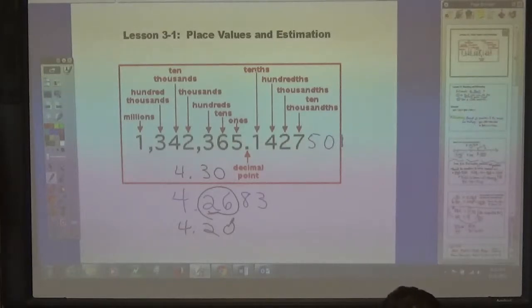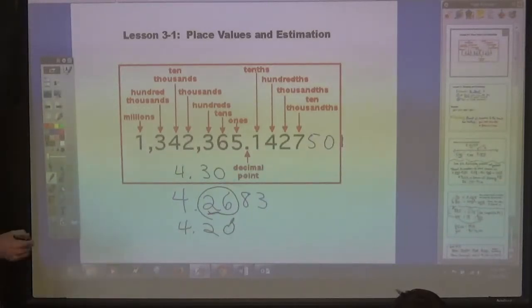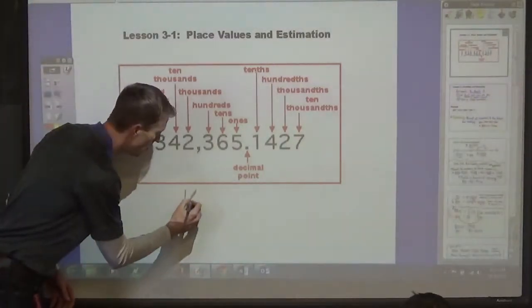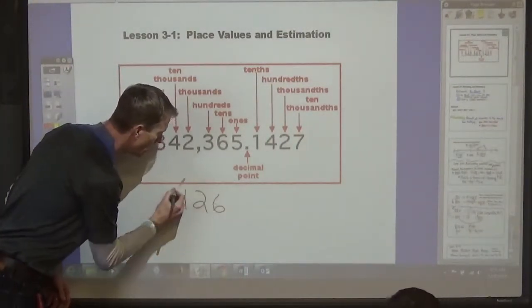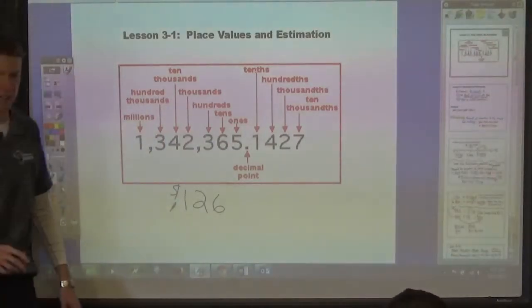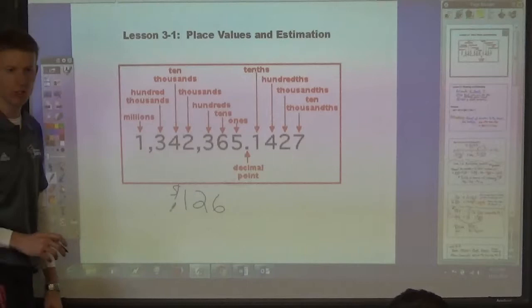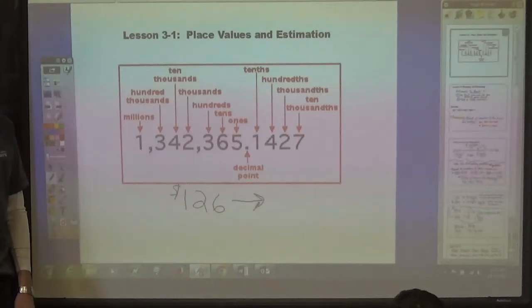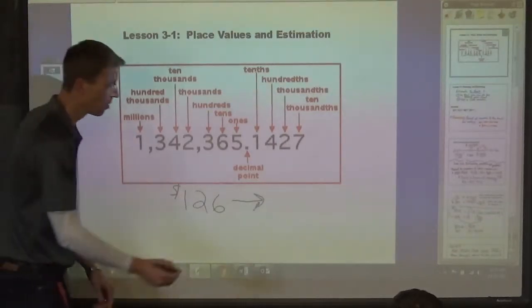Turn to page one hundred thirty. You can estimate a result before you calculate, and then if your answer is close to your estimate, you know that you're probably correct. So, for example, the number one hundred twenty-six dollars, what's the nearest dollar amount that makes sense to round it to? One hundred thirty. One hundred thirty dollars.